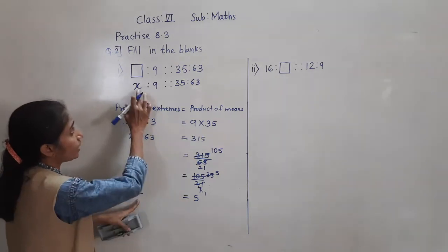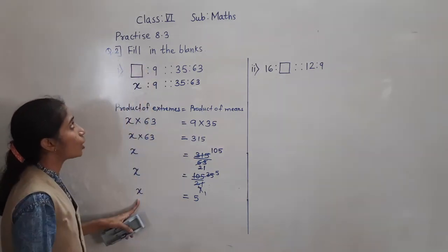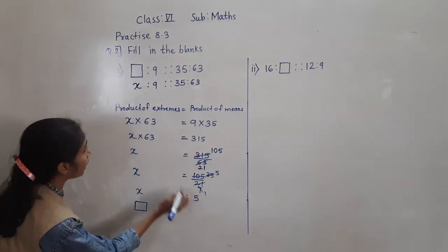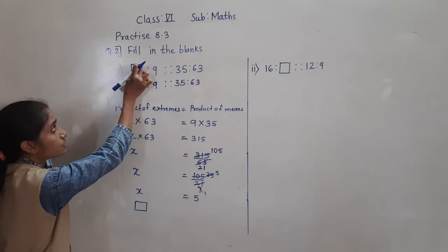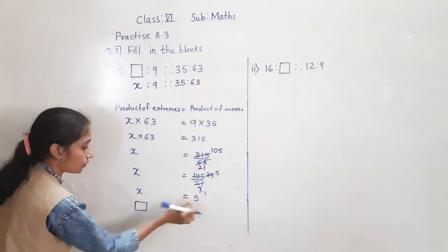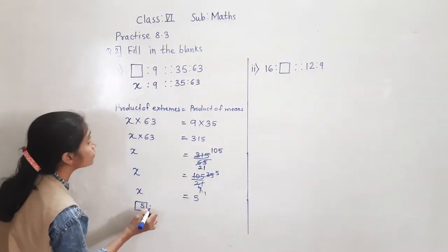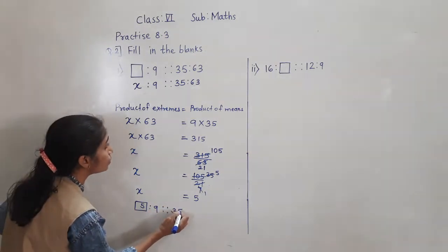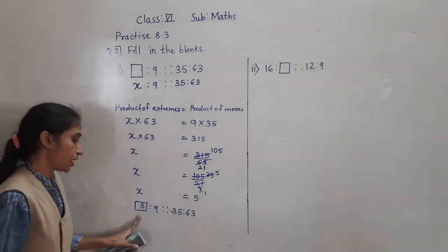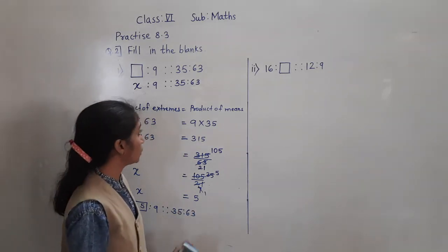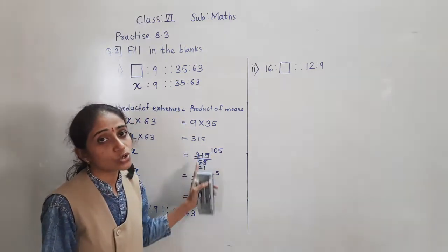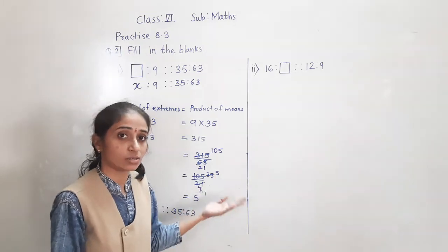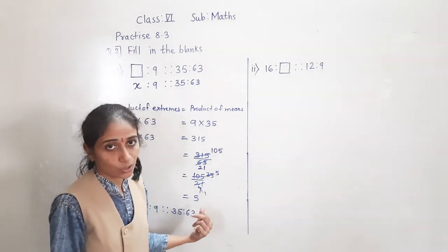X we got is 5 - we took X in the place of the blank box. So now what will we write in the place of blank box? 5. What we took? The blank box, we took X. So X value we got is 5. So 5 is to 9 proportion 35 is to 63. Here I have shown the calculation by both methods - whichever is easy for you, that method you can apply.